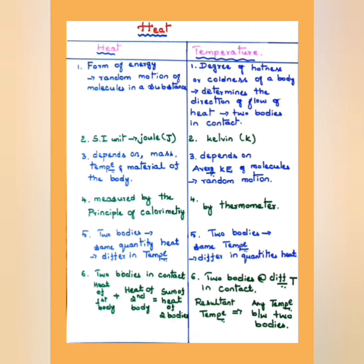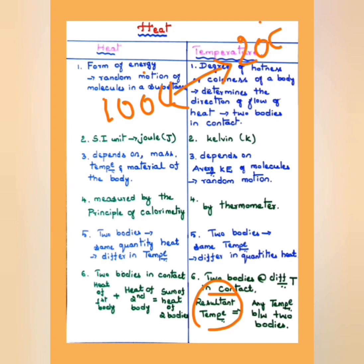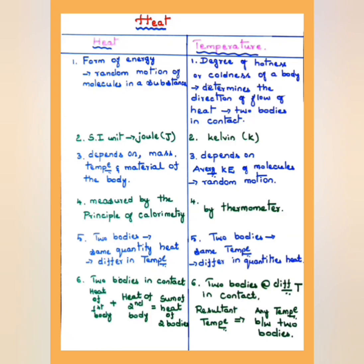In the case of temperature, when two bodies at different temperatures are in contact, the resultant temperature will be somewhere between the temperatures of the two bodies. For example, if one object is at 100°C and another is at 20°C, the resultant temperature on mixing will lie between 20 and 100. These are the main points regarding heat and temperature.